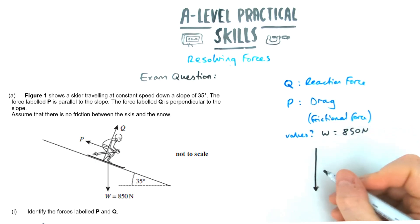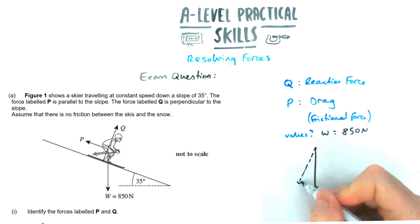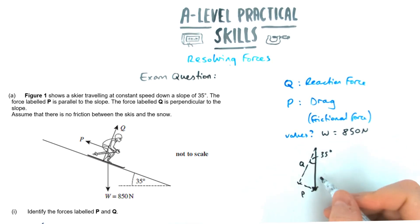Let's draw our triangle again. I've got my hypotenuse, the weight, 850 newtons going down, and I'm going to have the component going perpendicular to the slope is going to be Q. That's at the same angle as the slope, which is 35 degrees.